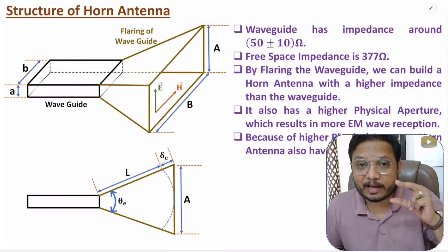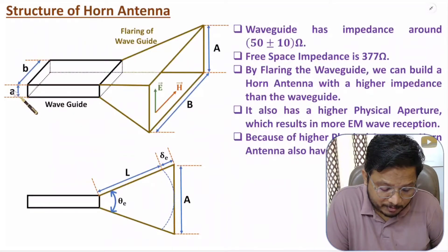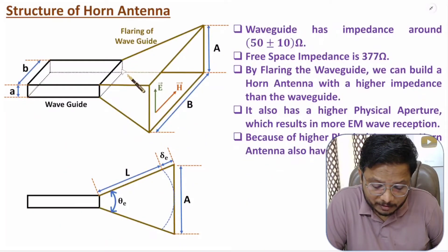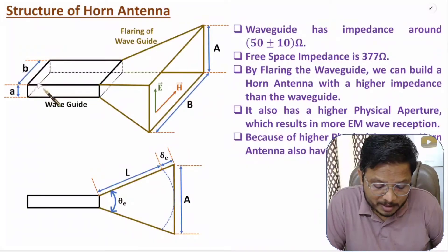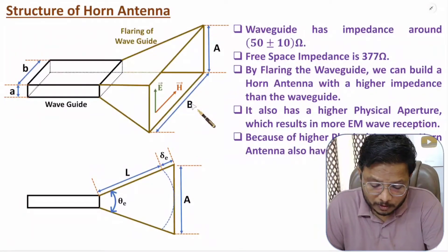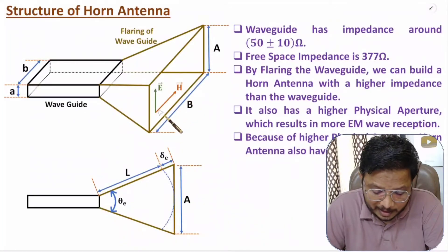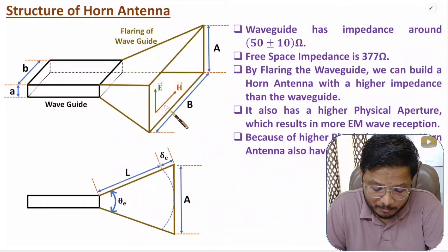The horn antenna structure is based on flaring of the waveguide. The waveguide has vertical dimension small 'a' and horizontal dimension small 'b'. By providing flaring, vertical dimension is increased to capital 'A' and horizontal dimension is increased to capital 'B'. Since we are providing flaring in both vertical and horizontal dimensions, this is called a pyramidal horn antenna.